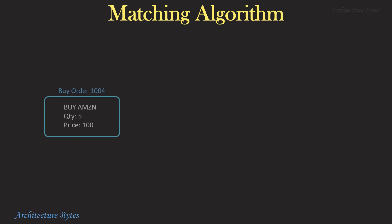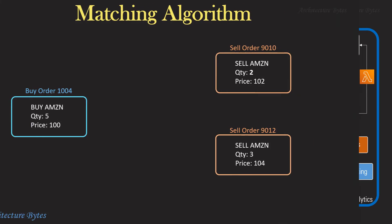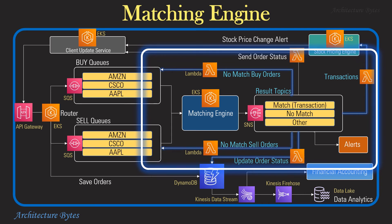Here's another example where a buy order cannot be fulfilled from available sell orders, as the sale price of the orders is higher than the buy order price. In this case, all these orders will have to wait for a match. Orders from the no-match topic are picked up by Lambda functions and placed back in the respective buy and sell queues for the next round of processing.